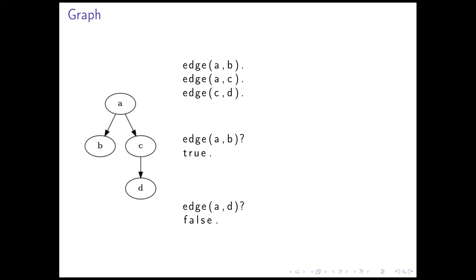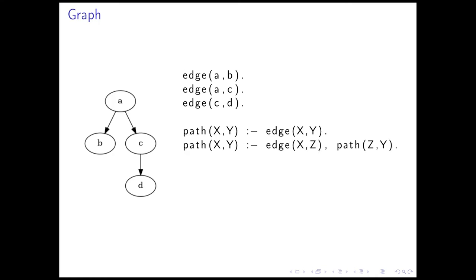We can do more interesting things — namely, we can define more complicated predicates. We could, for example, define what it means to have a path between X and Y. We say there is a path from X to Y if there is an edge from X to Y — this is the base case. And there also can be a path from X to Y if there is an edge from X to Z and a path from Z to Y, where Z is an intermediary point — the recursive case. This is exactly the definition of a transitive closure. We can now query our logic program and ask, is there a path between A and D? And it will answer true.